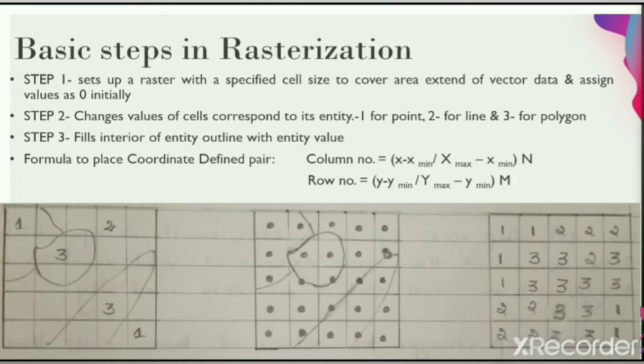To find the coordinate defined pair for the rows, the row number will also be calculated. We use (y - y_min) / (y_max - y_min) × M, where M will be the total number of rows in that grid cells.